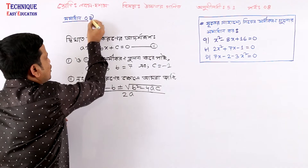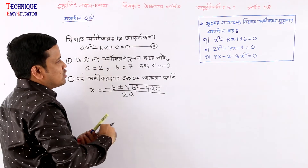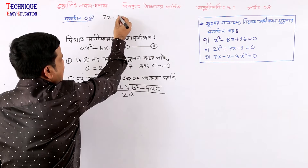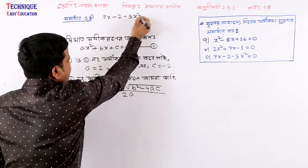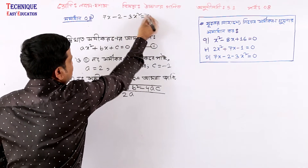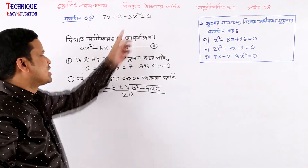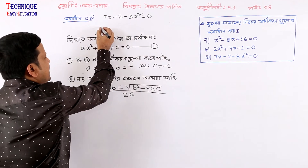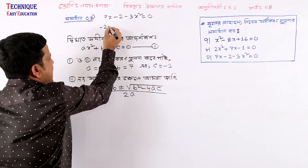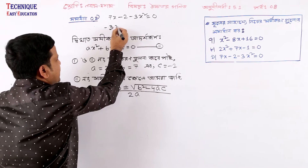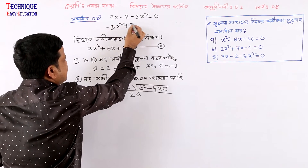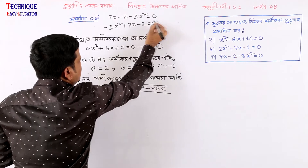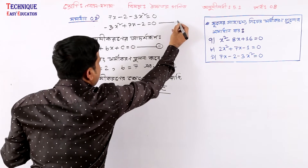Number 9: 7x minus 2 minus 3x squared equal to 0. See, x is to the power 2. So I will read minus 3x squared plus 7x minus 2 equal to 0. So this is number 1.